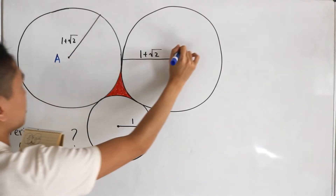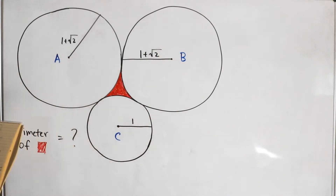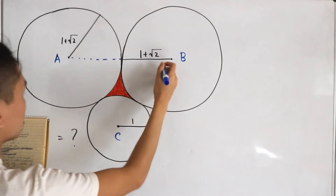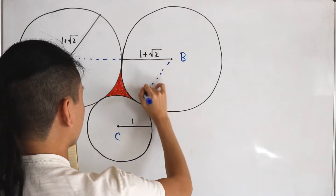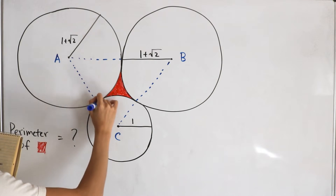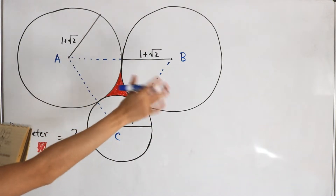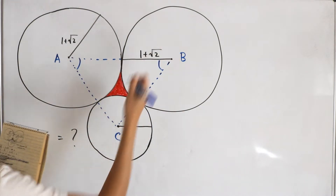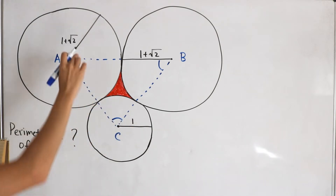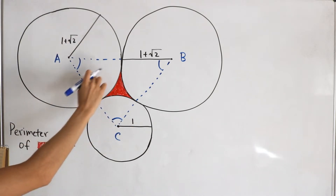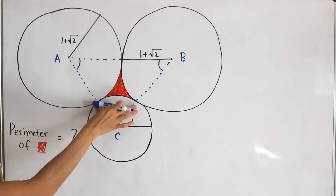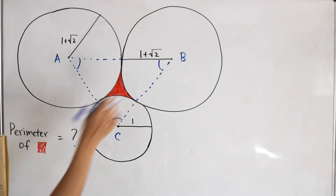I'll label these centers as vertices A, B, and C. Now let's extend those line segments out, forming lengths connecting these points. You'll see that we actually have a triangle constructed here. What's nice is that because we have radii of one plus the square root of two on two sides, we actually have what seems to be an isosceles triangle, with a different base length and two equal side lengths from line segments AC and BC.